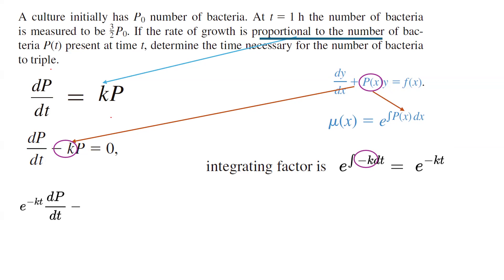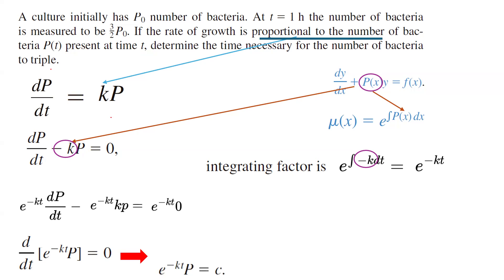We multiply the standard form by the integrating factor, giving us e to the power negative kt times dp/dt, minus e to the power negative kt times kp, equals zero. Grouping the left-hand side, the rate of change with respect to t of the quantity e to the power negative kt times p becomes zero. Integrating both sides, we get e to the power negative kt times p equals a constant. Simplifying, the population p(t) equals c times e to the power kt.